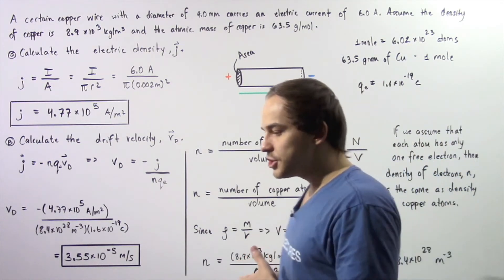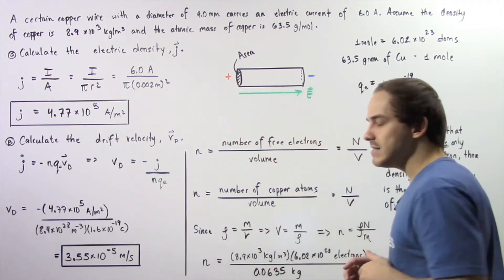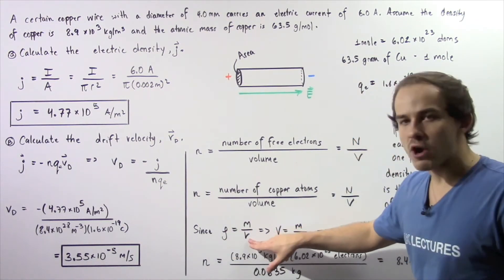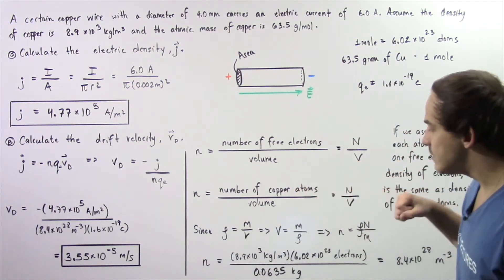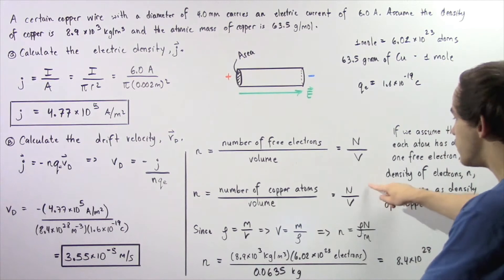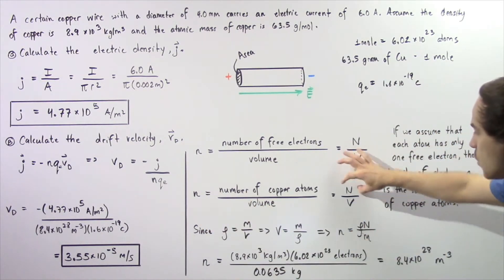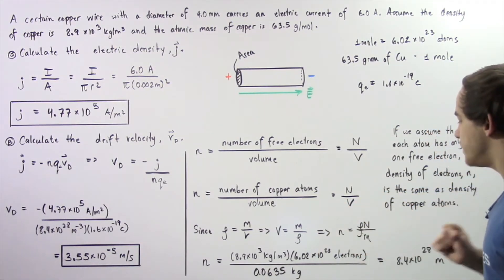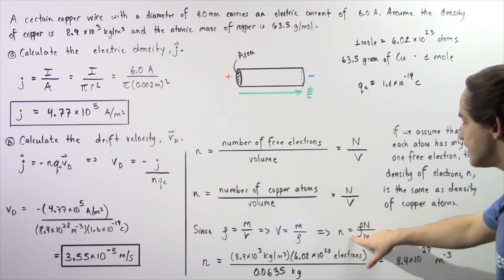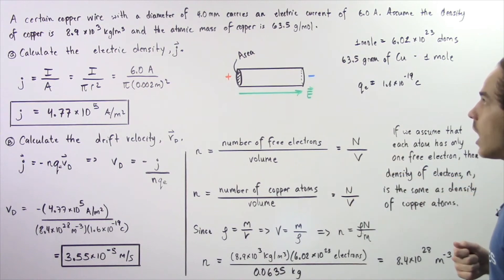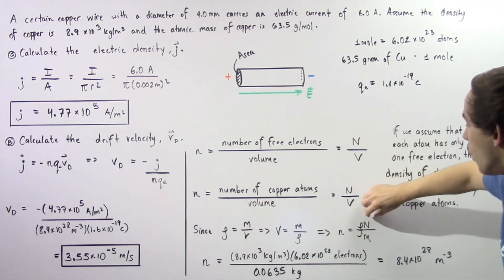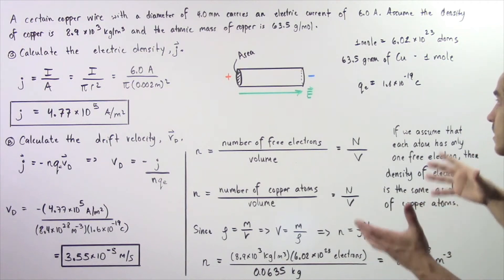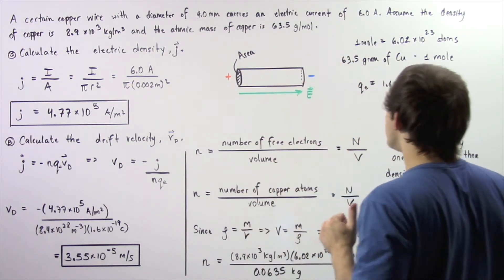Recall that density equals mass divided by volume, so volume equals mass divided by density. Substituting into our expression for n — which is N divided by V — we replace V with mass divided by density. This gives us n equals density rho multiplied by N, the number of atoms, divided by the mass.